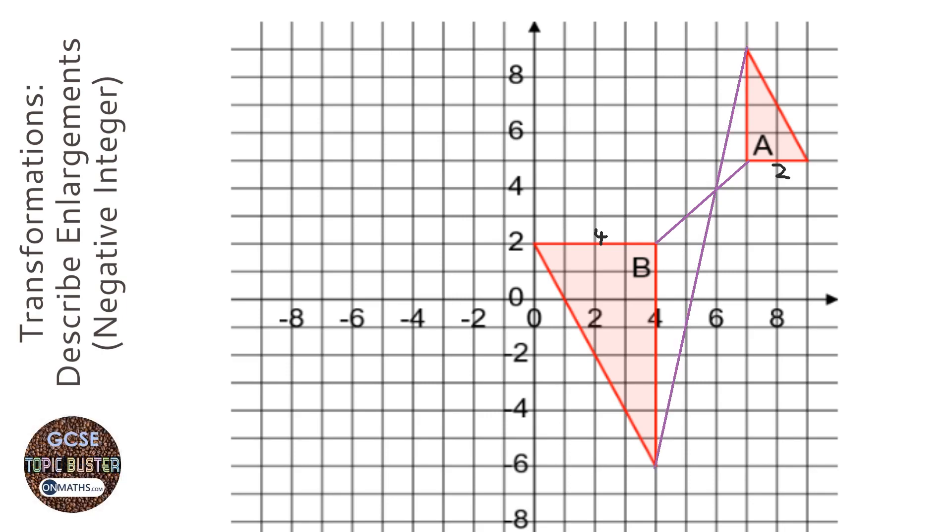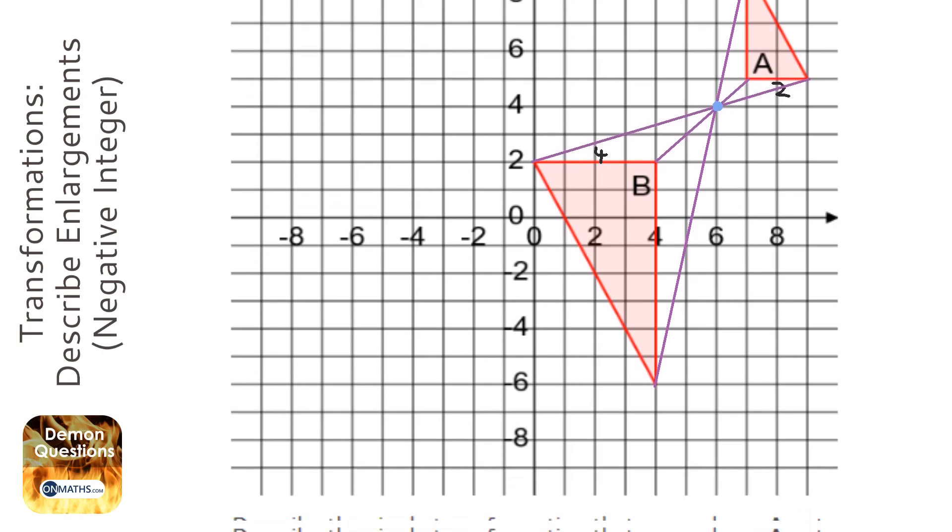Then I'm going to connect the last two up, and what you can see is they all cross over at this point here. So that's our center of enlargement. But what's our scale factor? Well, whenever a shape goes through the center of enlargement, it's a negative scale factor, so we know it's going to be a two, but it's actually negative two.